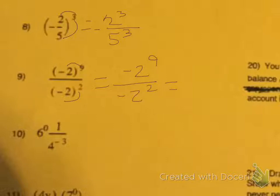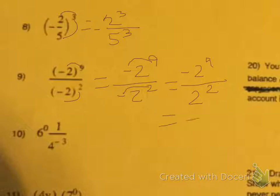And since 9 is odd, this one will stay a negative, and since 2 is even, this becomes a positive. So you have negative 2 to the 9th over 2 to the 2nd power, which reduced becomes negative 128.